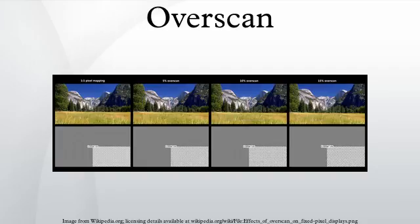Origins: Early analog televisions varied in the displayed image because of manufacturing tolerance problems. There were also effects from the early design limitations of power supplies, whose DC voltage was not regulated as well as in later power supplies. This could cause the image size to change with normal variations in the AC line voltage, as well as a process called blooming, where the image size increased slightly when a brighter overall picture was displayed due to the increased electron beam current causing the CRT anode voltage to drop. Because of this, TV producers could not be certain where the visible edges of the image would be.